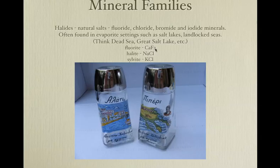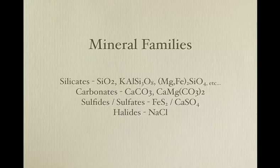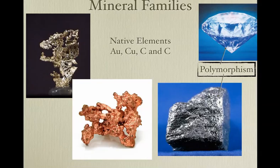Here are some halides. They can be minerals — yes, we eat minerals. Here are the mineral families summarized. There are the native elements — things that are just elements and appear as minerals: gold, copper, carbon in two different forms — diamond and graphite. Some of you are using graphite right now to write your notes.